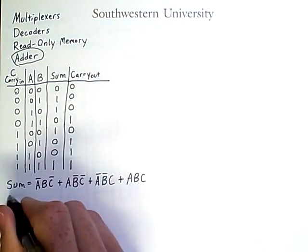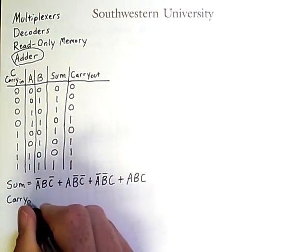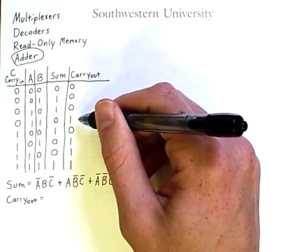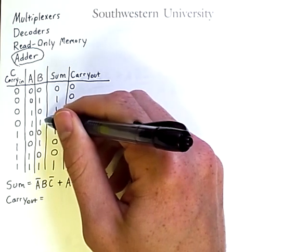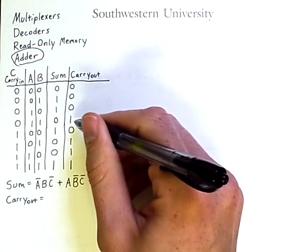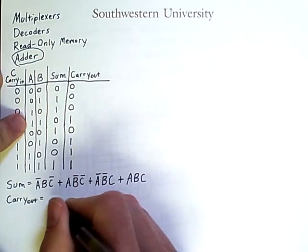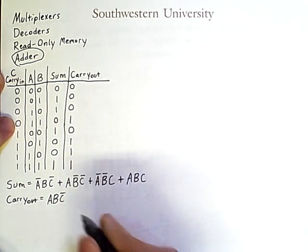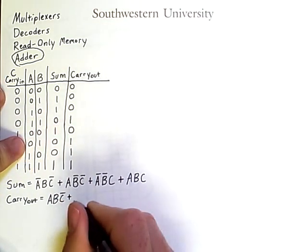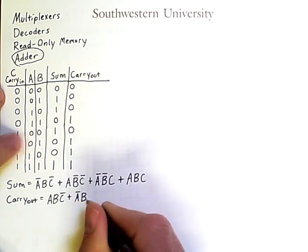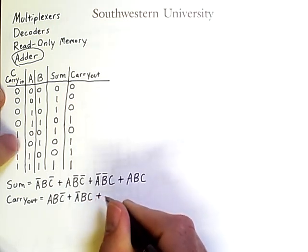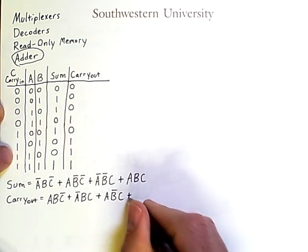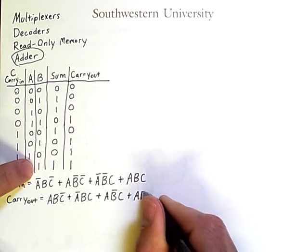We can go through a similar process to find an expression for carry out. We simply find the rows where the final result is true, combine the inputs in an and, and then combine those sub-expressions in an or. Like so. Carry out is true if a is true and b is true and c is not true. Or if not a and b and c, or a and not b and c, or a and b and c.